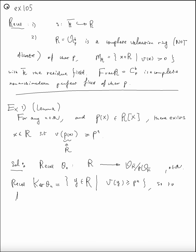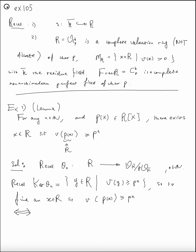So to find elements x in R such that valuation of x is bigger than p to the power n is equivalent to finding elements of R in the kernel of zeta_n, which means zeta_n of p(x) equals zero.